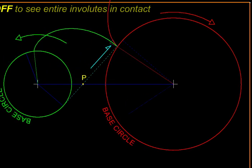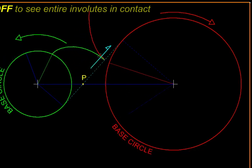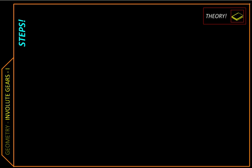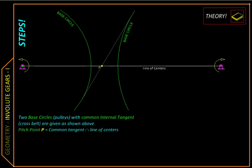Now we are going to take a closer look at their contact geometry. So let us start with two pulleys connected with a cross belt like this, and we are going to draw a line connecting their centers.